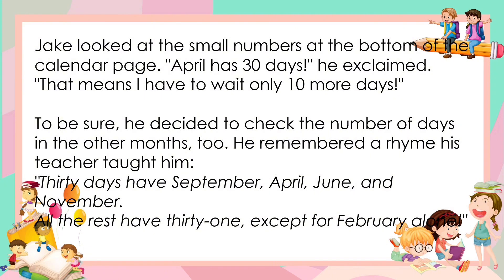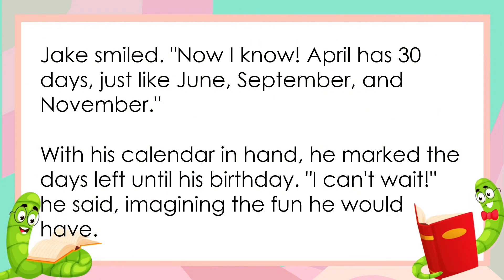'My birthday is in April,' he said to himself. 'I need to check how many days are in April so I can count down.' Jake looked at the small numbers at the bottom of the calendar page. 'April has 30 days!' he exclaimed. 'That means I have to wait only 10 more days.' To be sure, he decided to check the number of days in the other months too. He remembered a rhyme his teacher taught him: '30 days have September, April, June, and November. All the rest have 31, except for February alone.' Jake smiled. 'Now I know. April has 30 days, just like June, September, and November.' With his calendar in hand, he marked the days left until his birthday. 'I can't wait,' he said, imagining the fun he would have.